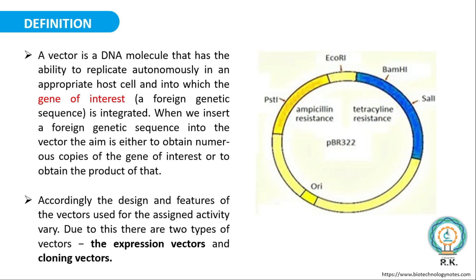The DNA insert that is transmitted by a vector is termed as recombinant DNA or rDNA, and the process is also known as recombinant DNA technology. This is an example of pBR322. pBR322 is a plasmid vector. As we know, most DNA is found in the nucleus of a cell. DNA that is also found outside the nucleus is called extrachromosomal DNA, extranuclear DNA, or cytoplasmic DNA.